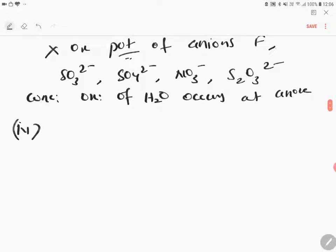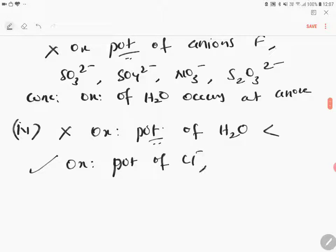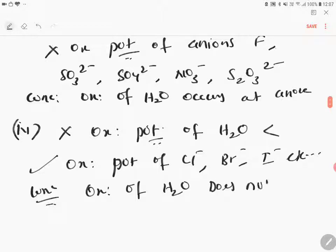This is less than oxidation potential of chloride, bromide, iodide, etc. So here, what happens? Oxidation conclusion: oxidation of water does not take place. Whereas, oxidation of these ions will take place at anode.